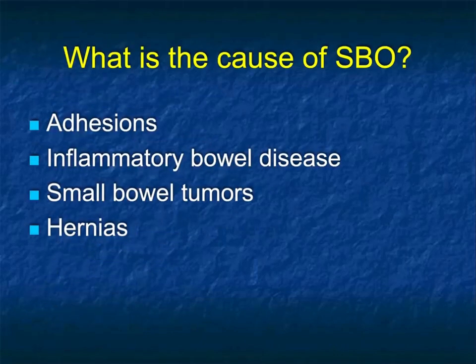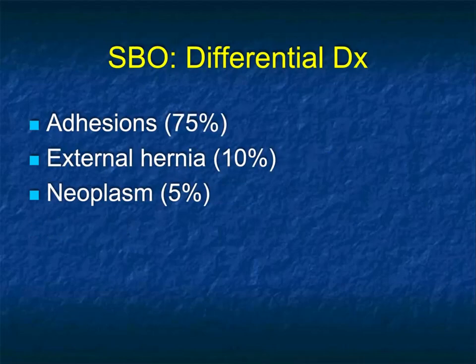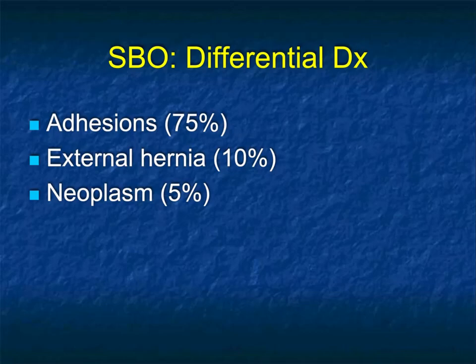The most common causes of small bowel obstruction are adhesions, IBD, small bowel tumors, and hernias. When you get down to the numbers, adhesions is by far number one. We used to think that with laparoscopic surgery there'd be less issue with adhesions, but the truth is there are the same or more issues with multiple trocars. Laparoscopic surgery does not eliminate adhesions. Looking back 100 years ago, the most common cause of small bowel obstruction was external hernias — so things have really changed over time.